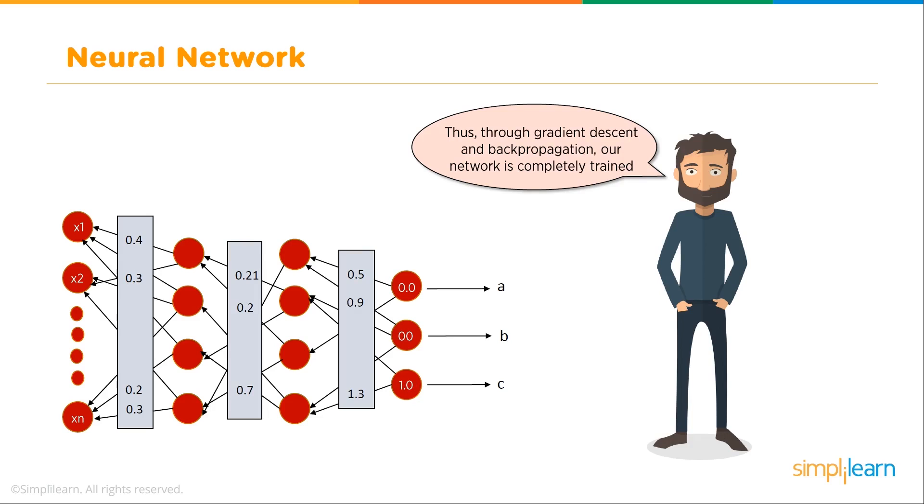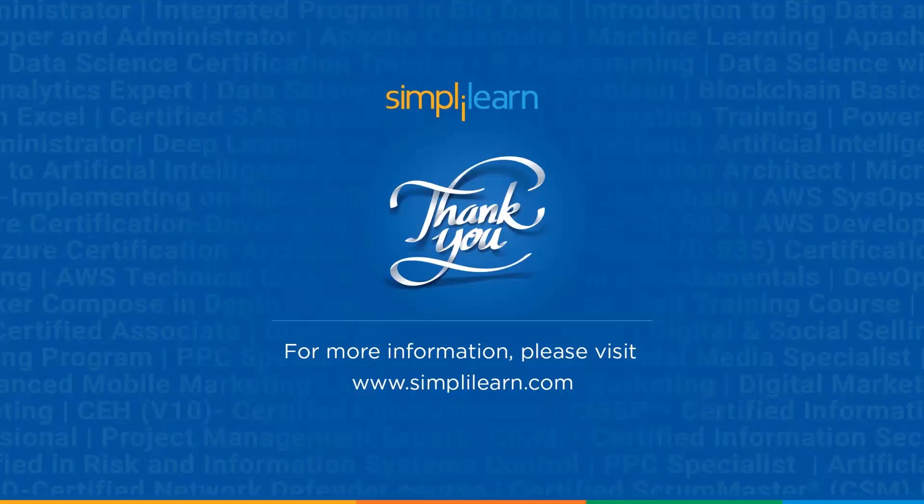Thus, through gradient descent and backpropagation, our network is completely trained. We've taught it to identify A, B, and C coming forward. One of the interesting things about neural networks is the training process takes a lot longer than the predicting process. You can plan one of these training neural networks doing the backpropagation to take significantly longer because you're going over thousands of data points. Then when you actually run it forward, it's very quick, which makes these things very useful and just really part of today's world in computing. I do want to thank you today for joining us.